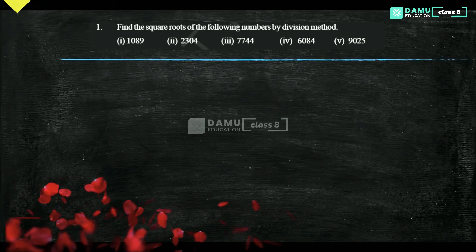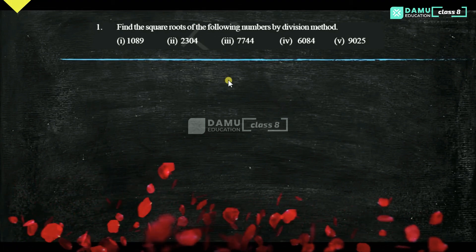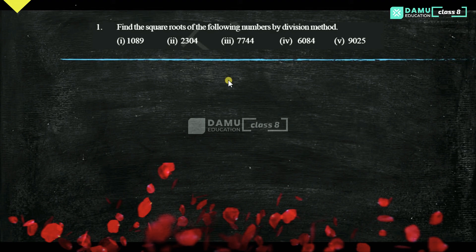Hello viewers, our next exercise is finding the square roots of the following numbers by division method. The first one is 1089.